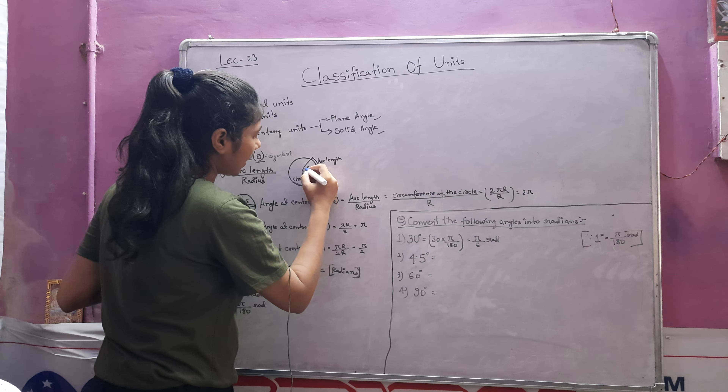Now you might think — we are studying about units, so where is the unit of this plane angle? Theta has the formula arc length upon radius. Arc length is a kind of length with units of meters, and radius also has units of meters. So meter cancels meter and we have no units. That is why we have fixed radian as the unit of plane angle theta.